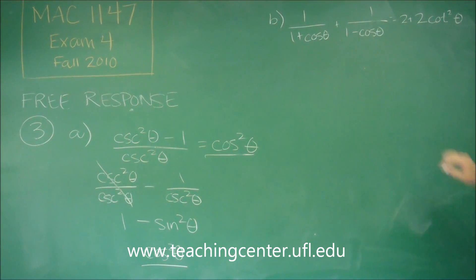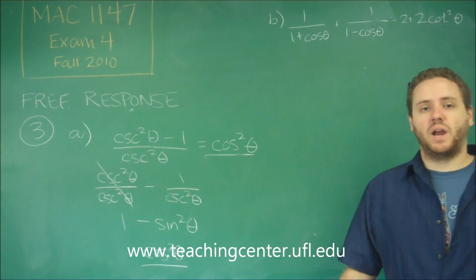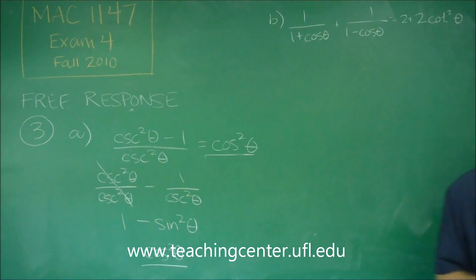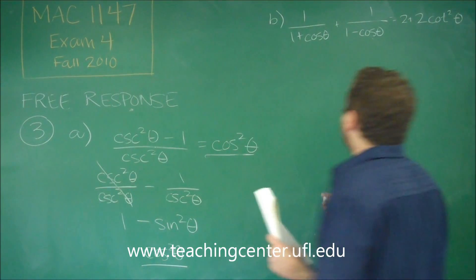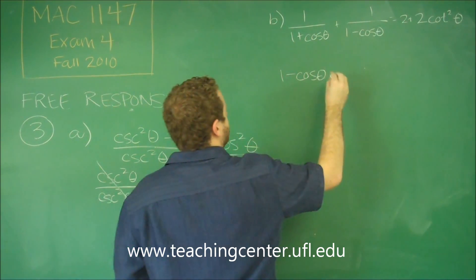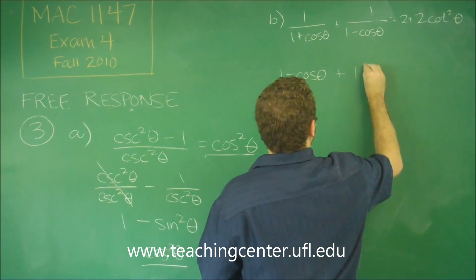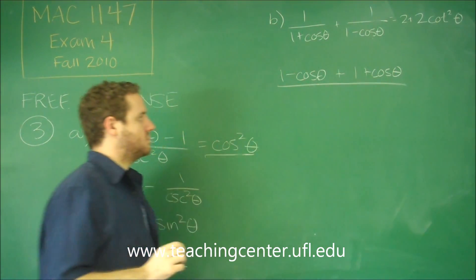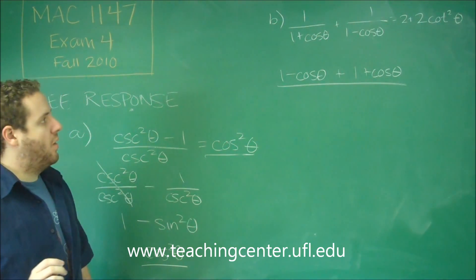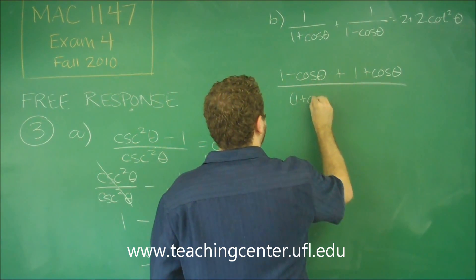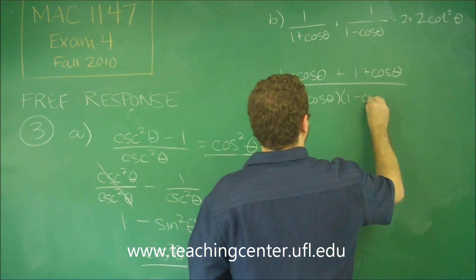Okay, so what we need to do here is we have two fractions that have different denominators. If we want to try to get these together and see what turns into one of our identities, we have to do a common denominator here. So the first one, we need a one minus cosine theta on the top, plus this one needed a one plus cosine theta. So now on the bottom, we have one plus cosine theta, one minus cosine theta.